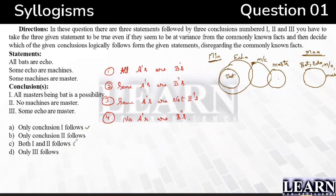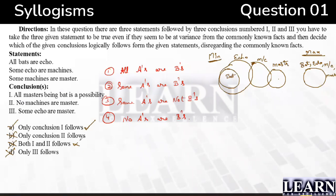Since conclusion 1 satisfies, we can eliminate options B and D. Now check conclusion 2: 'no machines are masters.' They are not saying 'no machines are masters is a possibility' — they are stating it directly. But in our diagram, some machines are masters, and in the maximum condition machines are also masters. So we cannot say 'no machines are masters.' Conclusion 2 does not follow. The answer is option A — only conclusion 1 follows.